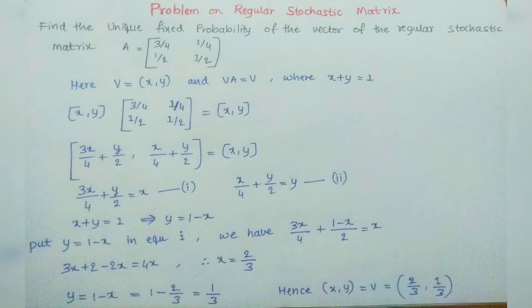Here V equals (x, y) and VA equals V where x plus y equals 1. V is a probability vector (x, y). The matrix [[3/4, 1/4], [1/2, 1/2]] multiplied by V equals V.